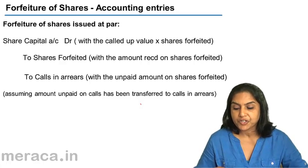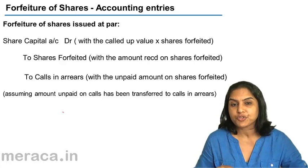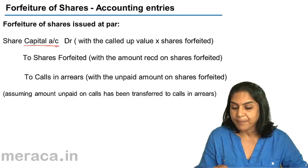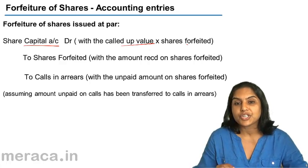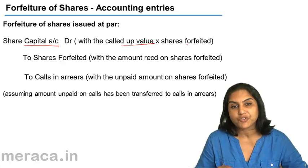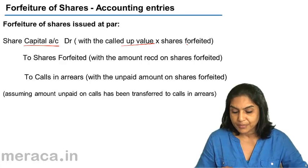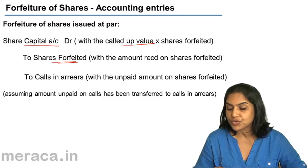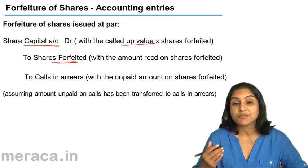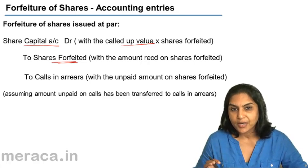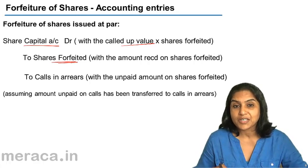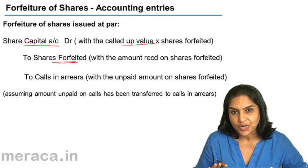What is the entry for shares which are issued at par? What happens as a result of forfeiture? The shares get cancelled, therefore share capital is wiped out. The entry is to debit share capital with the called up value into the number of shares forfeited. Share capital account is debited, and a new account called shares forfeited account is credited with the amount which has been received. When a shareholder's shares are forfeited, the amount received from him is put into the shares forfeited account — this is like a profit, the share is cancelled but this money is retained by the company.